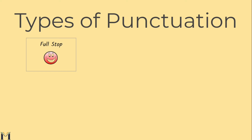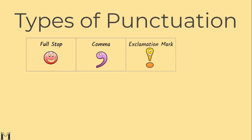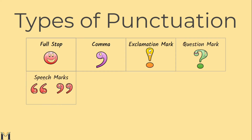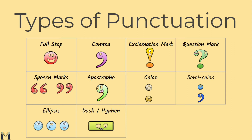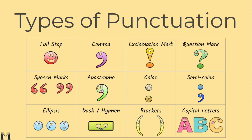Have a think — what types of punctuation do you already know? Full stops, comma, exclamation mark, question mark, speech marks, apostrophe, colon, semicolon, ellipsis, dash or hyphen, brackets, and capital letters.